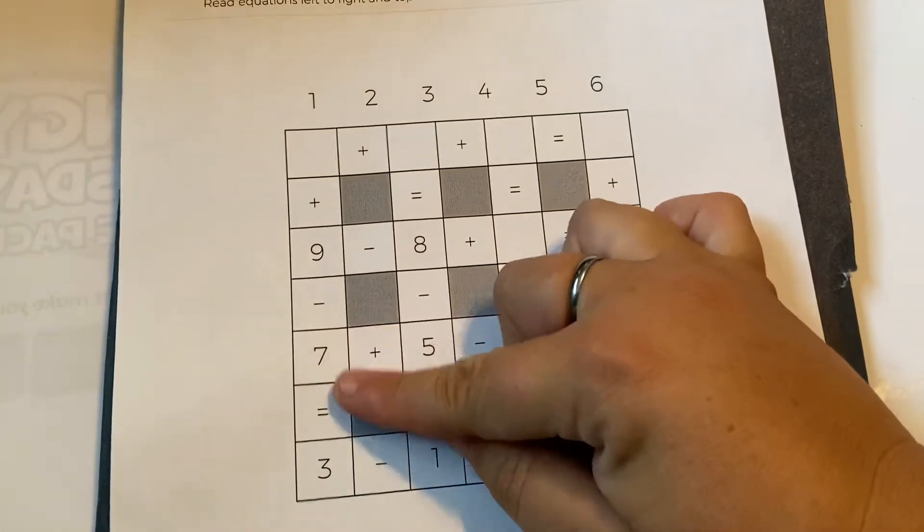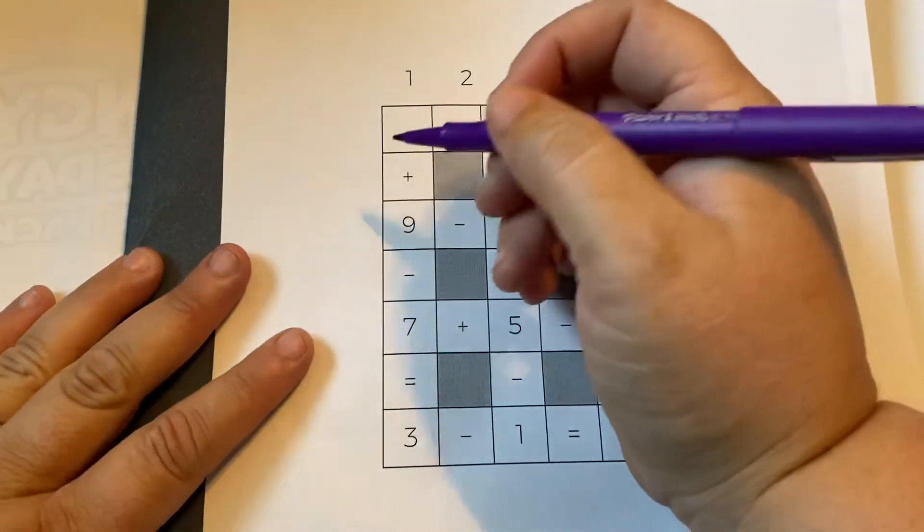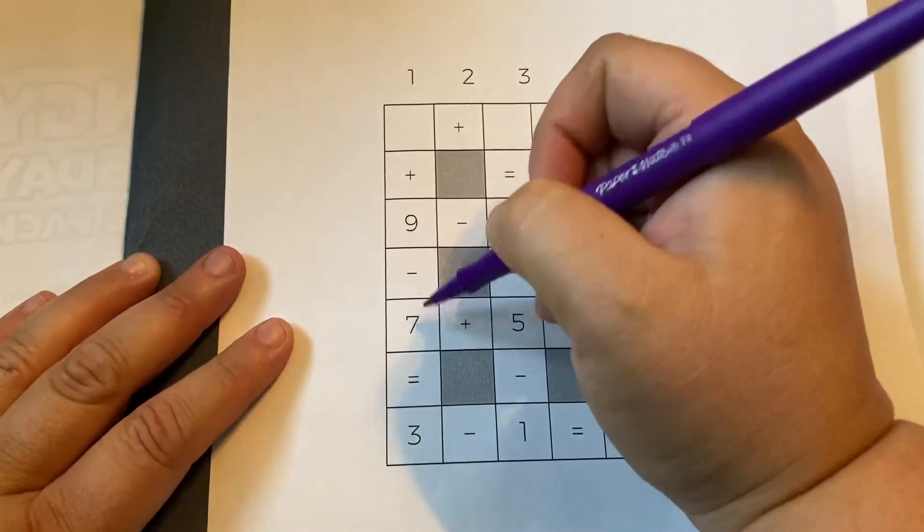Something plus nine minus seven equals three. So let's see. We don't know what we're adding yet but we can do nine minus seven.